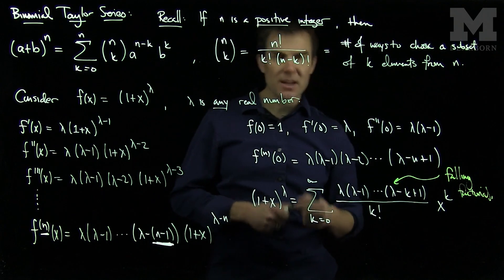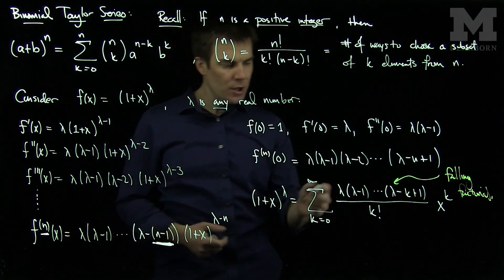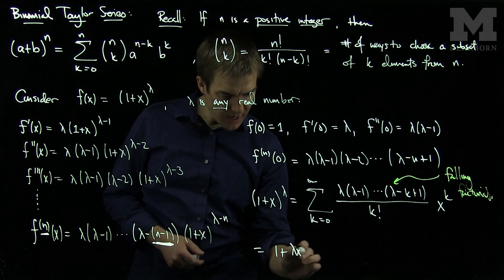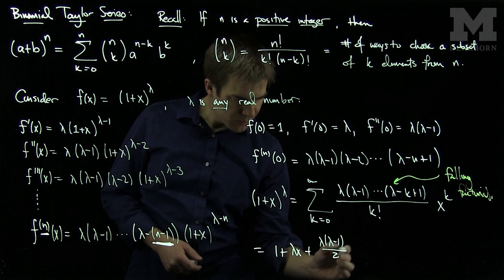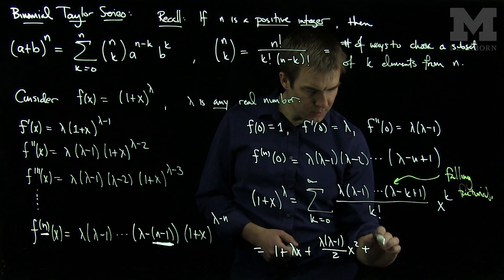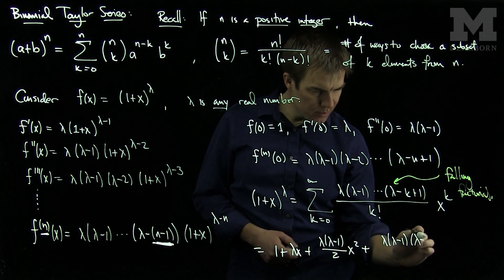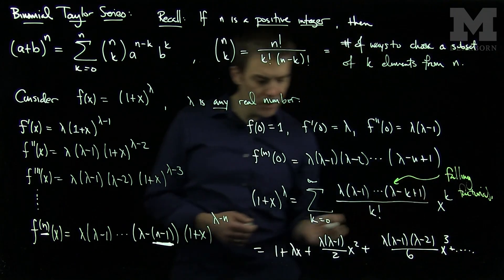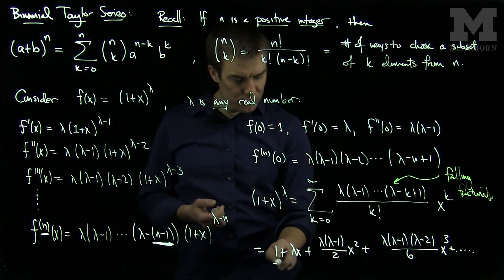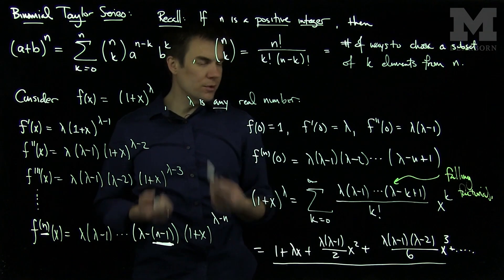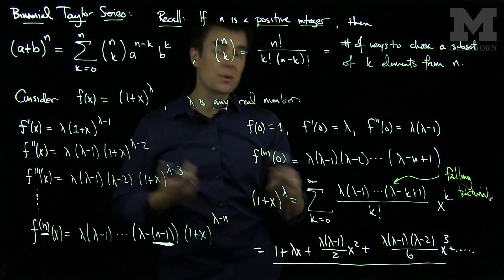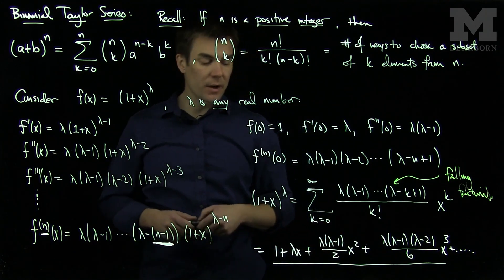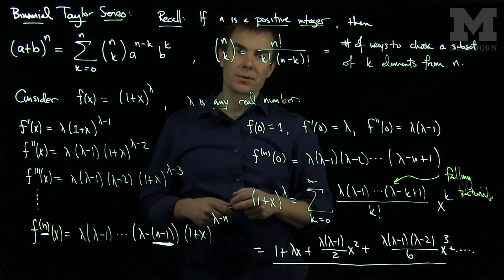When solving these problems, you'll typically use this expansion for approximations. The first few terms are: 1 + λx + λ(λ−1)/2 · x² + λ(λ−1)(λ−2)/6 · x³ + ···. The first three terms — up to the quadratic — are usually the most important for approximation purposes. Getting familiar with this formula for different values of λ and x is very useful. Thank you very much.